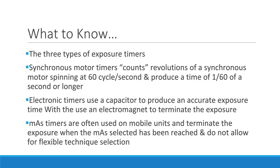When the capacitor is full, it discharges its current, causing an electromagnet to open the exposure switch and terminate the exposure. MAS timers are often utilized on mobile x-ray units — they monitor the total MAS and terminate the exposure when the preset MAS is reached. The MAS is set as a unit and cannot be manipulated into MA and time by the radiographer.